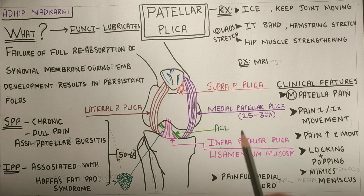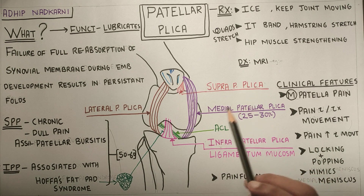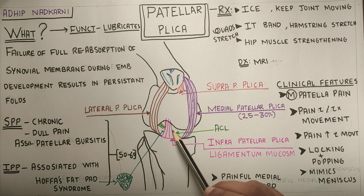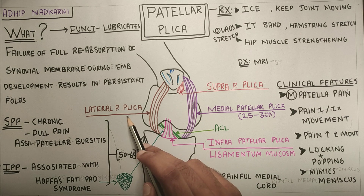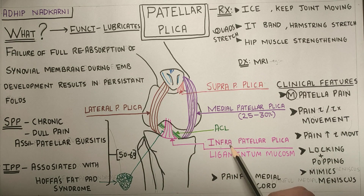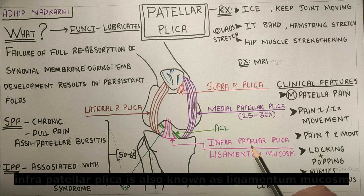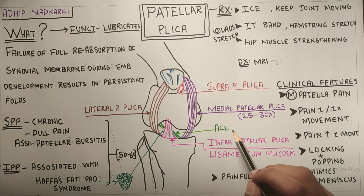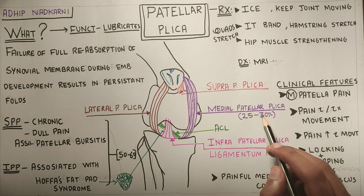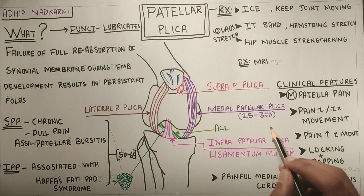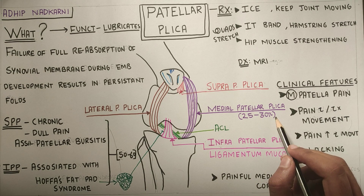There are four patellar plicas: supra, infra, medial, and lateral. Supra and infrapatellar plica are seen in 50 to 60 percent of the population, whereas the medial patellar plica are seen in 25 to 30 percent of the people.